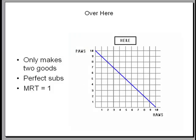Over here they can make paws and haws. When they make paws they give up one haw and when they make one haw they give up one paw. The marginal rate of transformation is one to one because the goods are perfect substitutes.